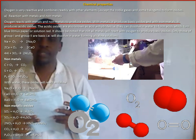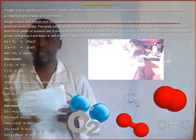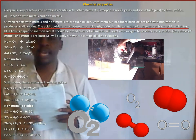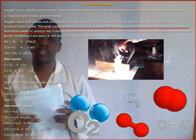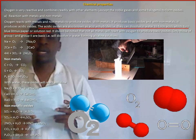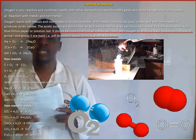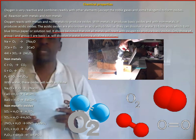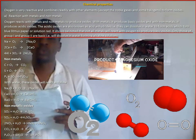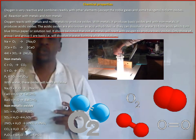With metals, oxygen produces basic oxides, and with non-metals, it produces acidic oxides. The acidic oxides are also known as acid anhydrides — they can dissolve in water to form acids, which turn blue litmus paper or solution red. It should be noted that not all metals react with oxygen to produce basic oxides; only those of Group 1 and 2 are basic, meaning they dissolve in water forming alkaline solutions.